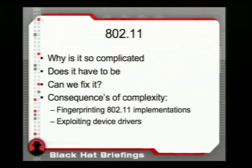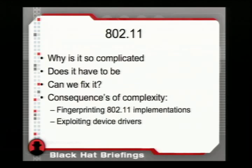Dave is the kernel-level, ring-zero, payload, ninja exploit guy, and I'm the 802.11 guy. If I hadn't met Dave, the demo would have been: here's a Windows box, I blue-screened it with EIP, now what? I'm going to talk about 802.11 and why it's particularly susceptible to these things — the biggest reason being it's just so complicated. The direct consequences of that complexity are: A, you can fingerprint it, and B, you can exploit it.